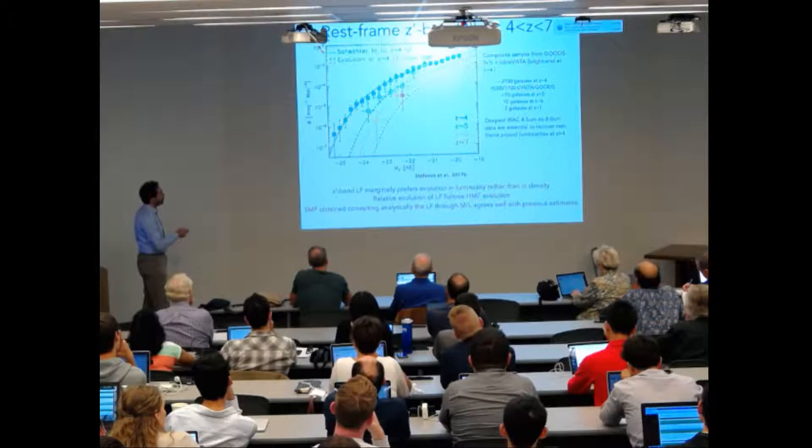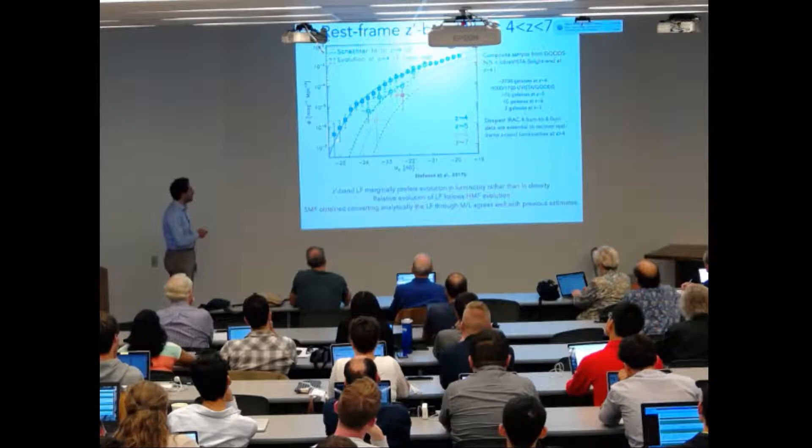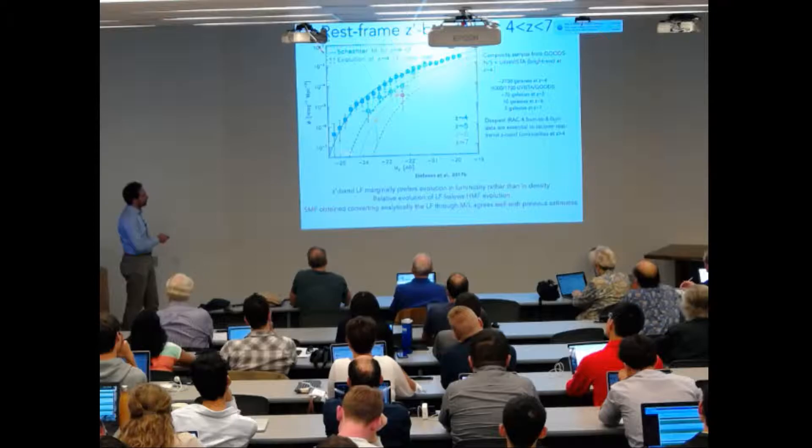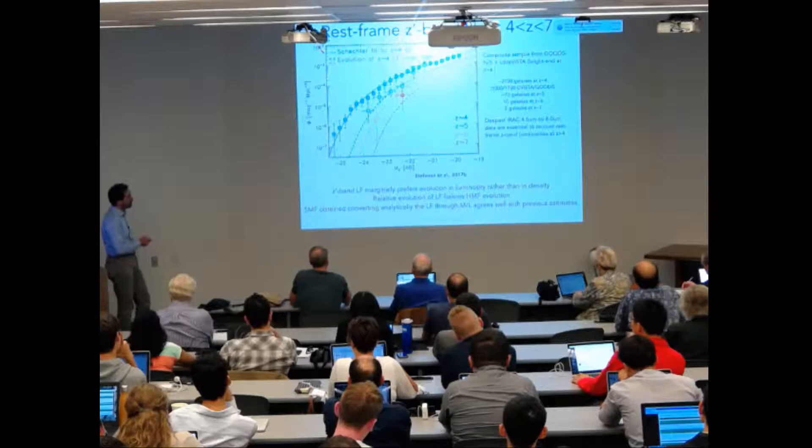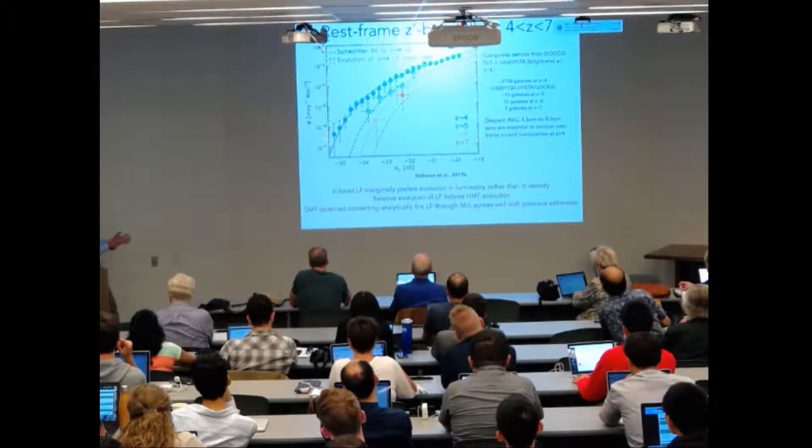between redshift four and seven. Our results are shown here. The solid blue curve represents the Schechter fit to the redshift four luminosity function. The dashed colored curves are not Schechter fits to redshift five, six, and seven, but are just the evolution of the redshift four luminosity function using the relative evolution of the halo mass function. We see that the evolution of the luminosity function is basically driven by the evolution of the halo mass function.